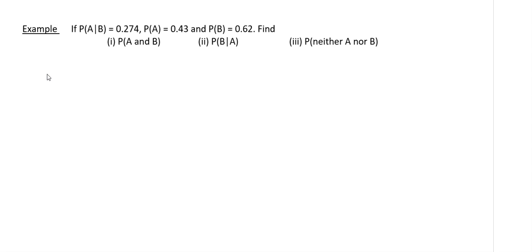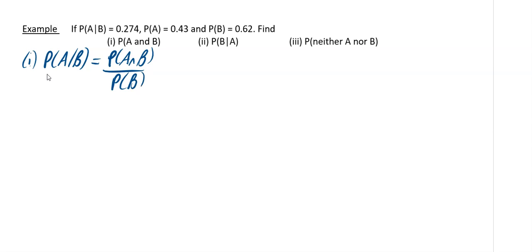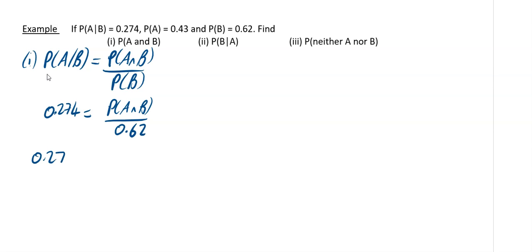Our last example: P(A given B) = 0.274, P(A) = 0.43, and P(B) = 0.62. Find P(A and B). Using the formula P(A given B) = P(A intersect B) / P(B), we fill in what we know: 0.274 = P(A and B) / 0.62. So P(A and B) = 0.274 × 0.62 = 0.16988, which to three significant figures is 0.170.